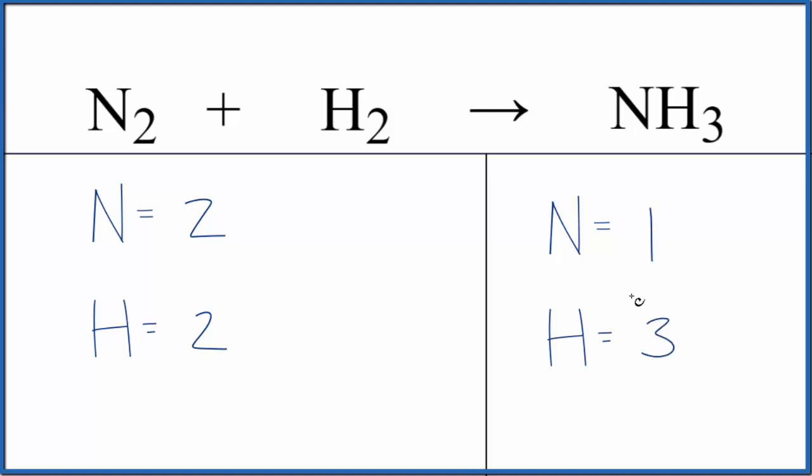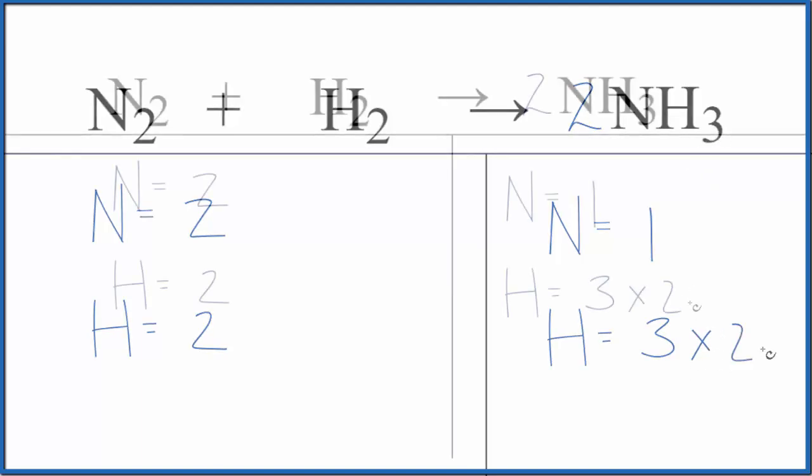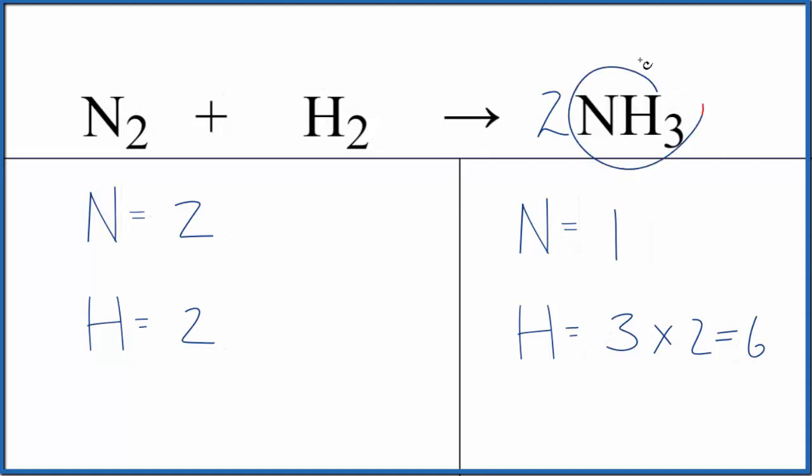It's probably a good idea to get this hydrogen, this odd numbered hydrogen, to be an even number. We can do that by putting a coefficient of two in front of the NH3. So three times two gives us six, so we have an even number, and the two goes to everything here so one times two gives us two nitrogen atoms.